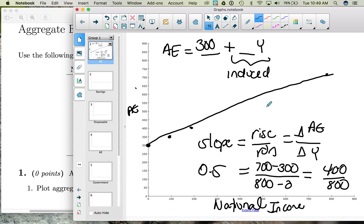This slope has a name. It is called the marginal propensity to expend or MPE.